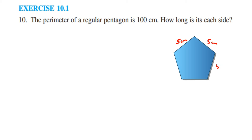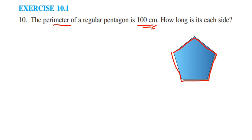Now what is given here? They have given the total perimeter — the total perimeter is 100 centimeters. That means after adding all the sides, the result is 100 centimeters. We have to find out the length of each side. Let's see how to do this.